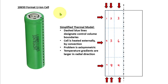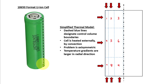In this video we're going to use MATLAB Simscape to set up a simplified thermal model for an 18650 format lithium ion cell. The 18650 format refers to an 18 millimeter diameter and a 65 millimeter length. An image of a cell is shown here with the cross section shown in the dashed lines, and on the right we see a schematic of that cross section.